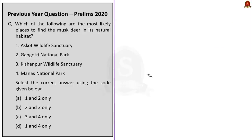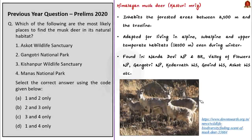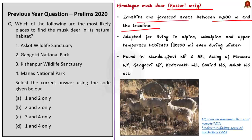Second question (2020 prelims): Which of the following are the most likely places to find the musk deer in its natural habitat? 1. Ascot Wildlife Sanctuary, 2. Gangotri National Park, 3. Kishanpur Wildlife Sanctuary, 4. Manas National Park. The Himalayan musk deer is locally known as Kasturi and is found in forested areas between 2,500 metres and the treeline, adapted to alpine, sub-alpine and upper temperate habitats — mostly cold, high-altitude ecosystems.